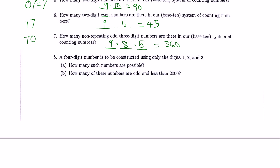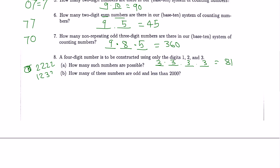Number 8: a 4-digit number is to be constructed using only the digits 1, 2, and 3. How many such numbers are possible? Since repetition is allowed, there are 3 choices for each of the 4 digits — for example, 2222 or 1233 are valid. So 3 times 3 times 3 times 3 equals 81 possible numbers.